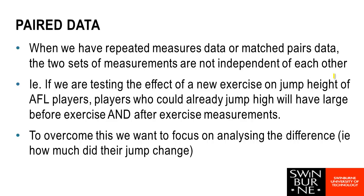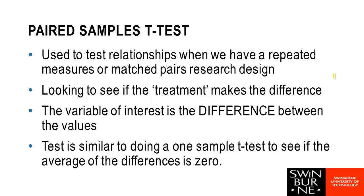Instead of looking at average height before and average height afterwards, we work out the difference for each person — the difference between the jump before the exercise and the jump after. Once we've worked out these differences, these differences become what we actually do our t-test with. So our paired samples t-test is where we've got the repeated measures or occasionally the matched pairs design, commonly a before and an after, and we're looking at the differences.